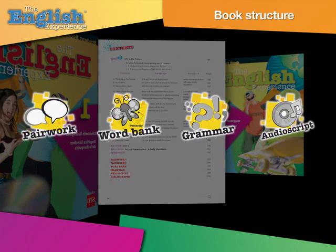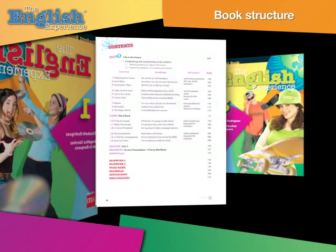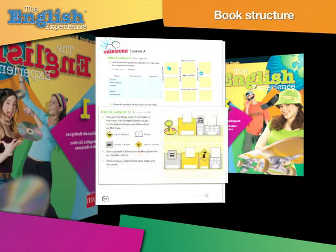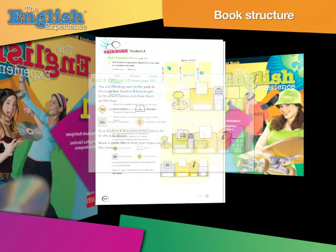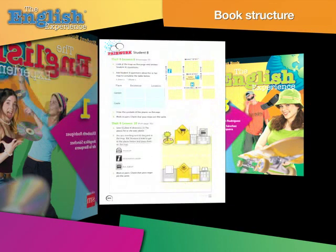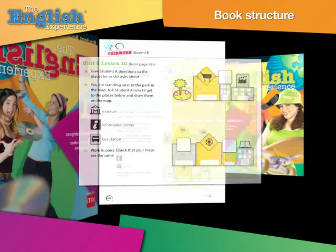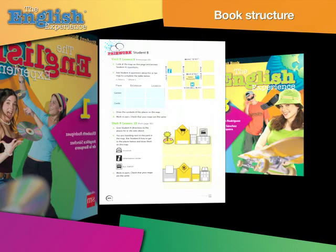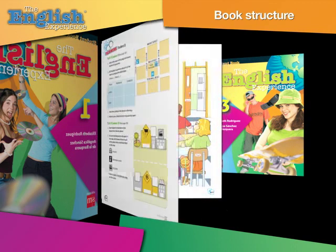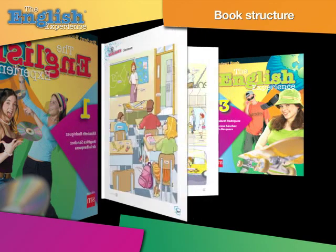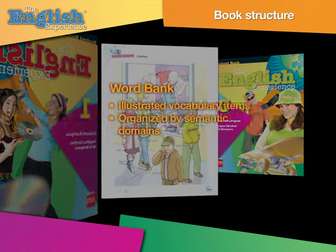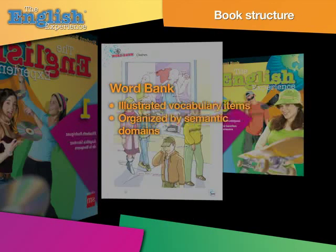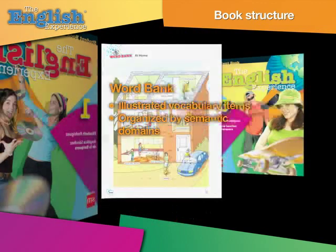Icons within lessons indicate the place where these sections might be most useful. The Pairwork section is divided into two parts, one for Student A and another for Student B. Pairwork contains information gap activities for students to conduct with a partner, and all of these activities are referenced in the lessons. The Wordbank is reference material for students to look up unfamiliar words. It includes a selection of illustrated vocabulary items per unit, organized by semantic domains.